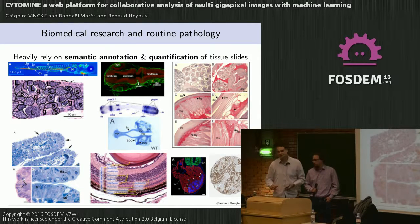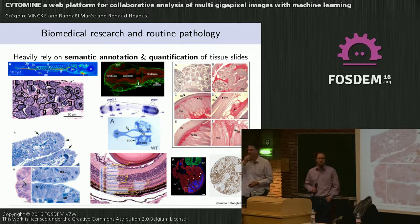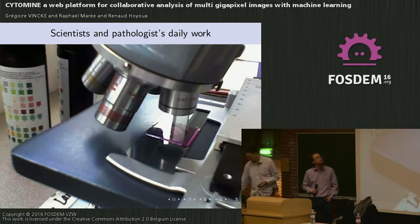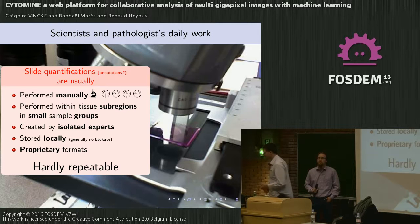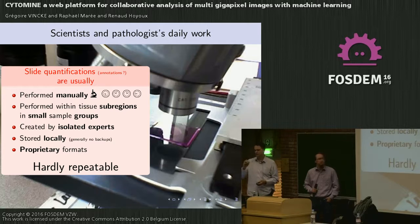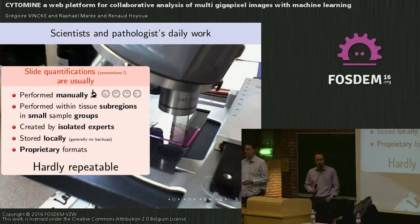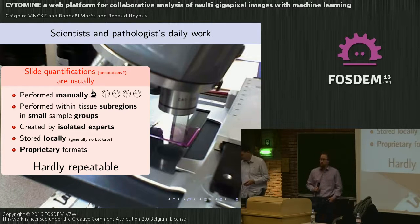In biomedical research and routine pathology, quite everything we are doing heavily relies on semantic annotation and quantification performed on tissue slices. Most of the time this is done using a microscope — the real physical slice. It's performed manually, so it's very time-consuming, and as it's time-consuming, people do not analyze all the slides. They do their analysis in sub-regions using very small sample groups, and generally these annotations are made by isolated experts with no collaboration between them.